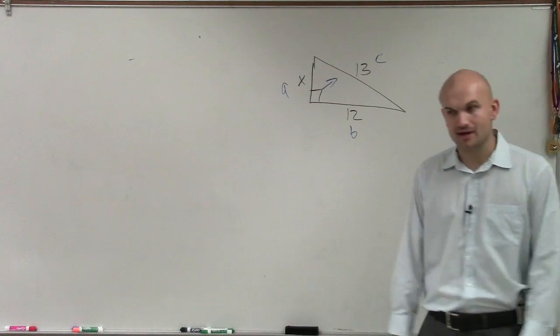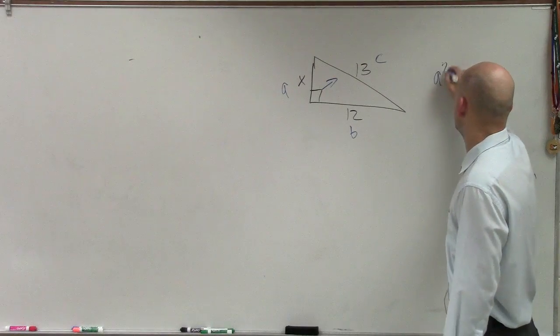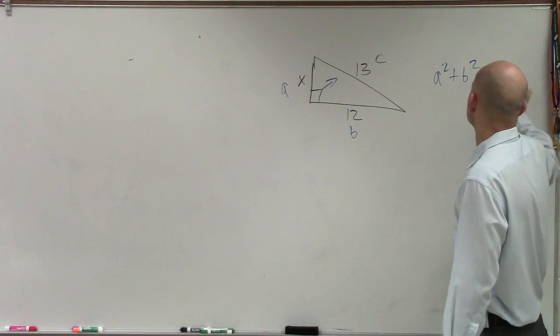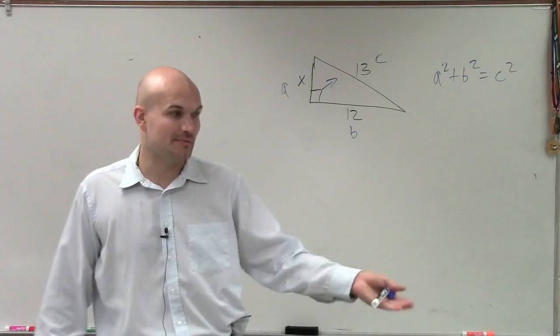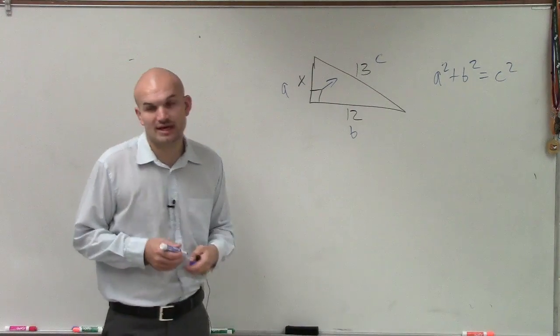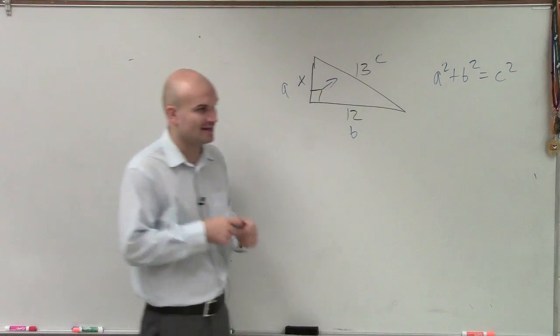Now you don't have to call them A, B, and C. But a lot of us always remember A squared plus B squared equals C squared. So sometimes it's easier to say, hey, find the hypotenuse, label it C, and then label the other two legs A and B. But you can really label them anything else, like X and Y.